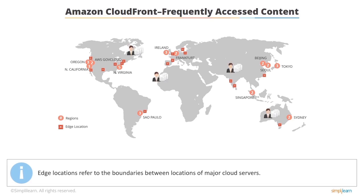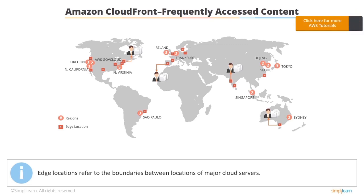When a visitor requests the desired content — whether it is dynamic, static, or streaming — Amazon CloudFront makes it available from the nearest network of edge locations. This results in objects traveling shorter distances, thereby improving website performance.